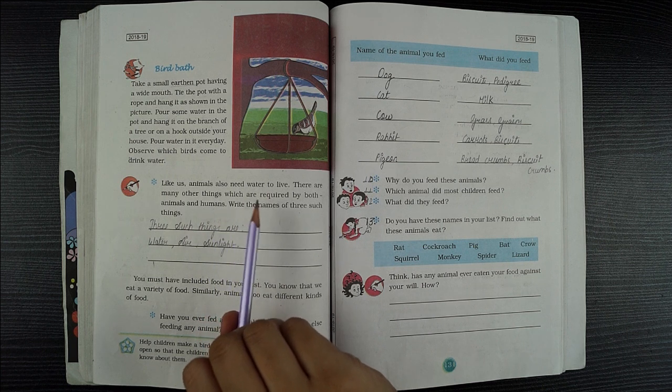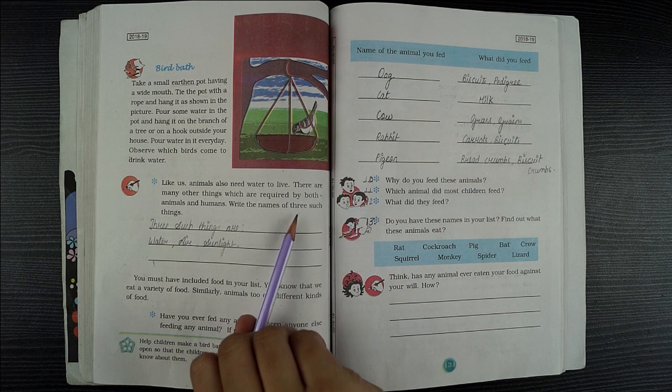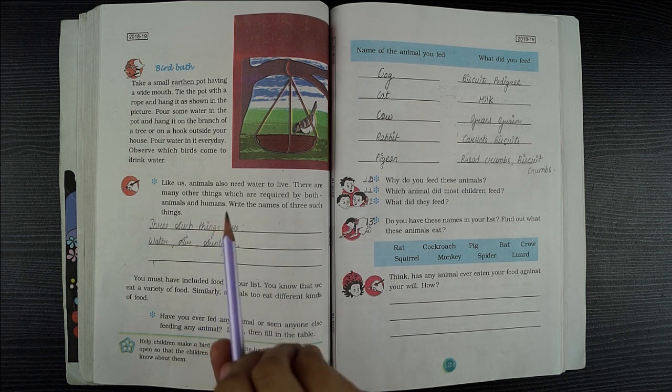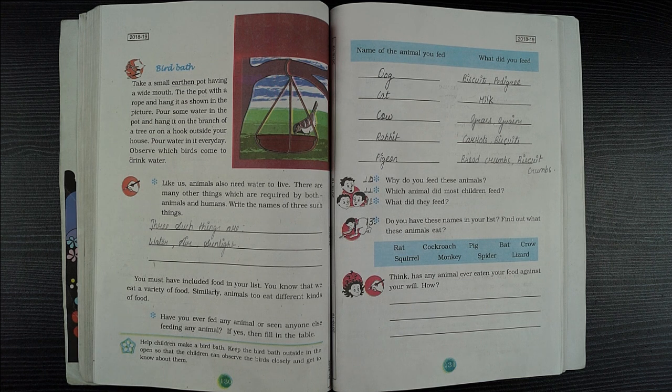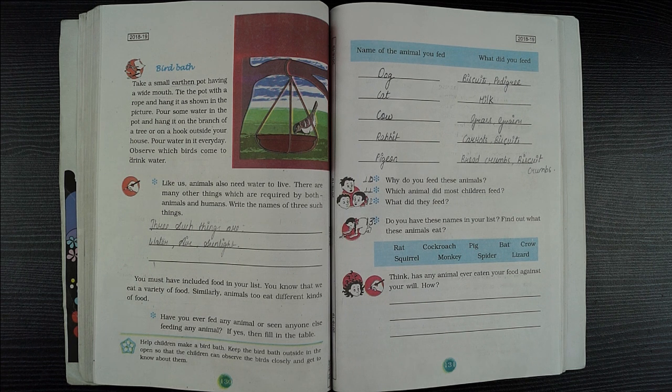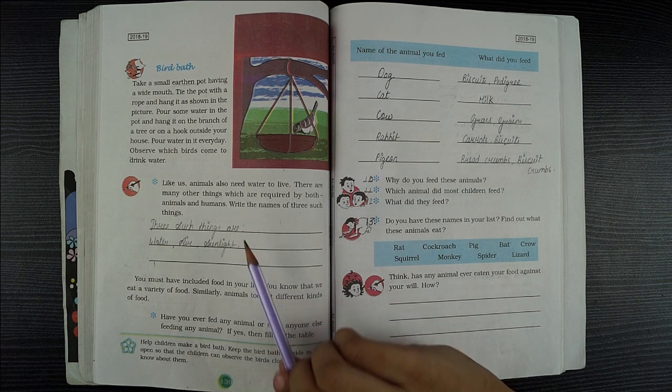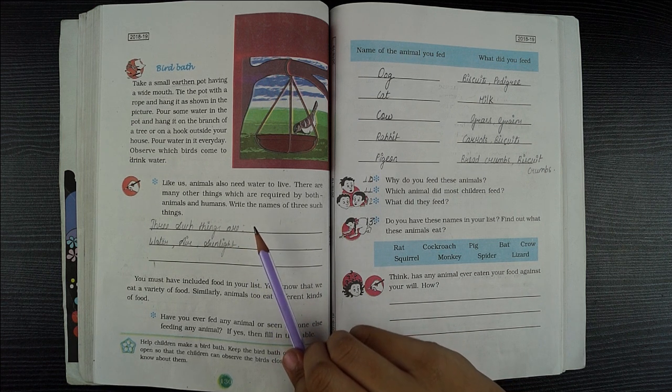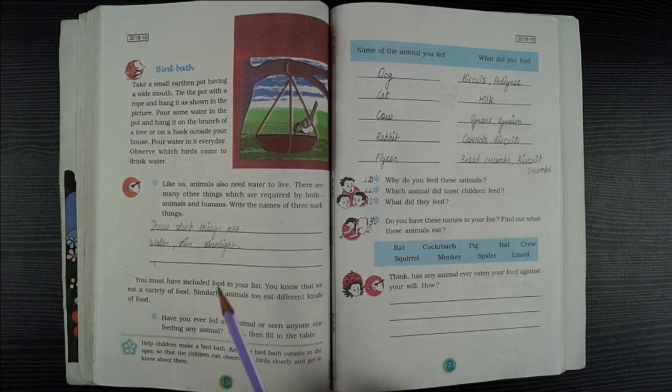Like us, animals also need water to live. There are many other things which are required by both animals and humans. Write the names of three such things. Three such things are water, air, and sunlight.